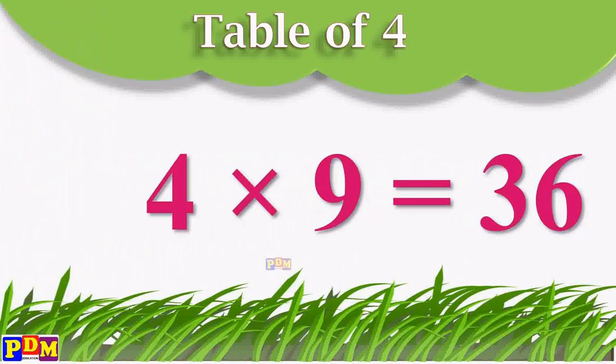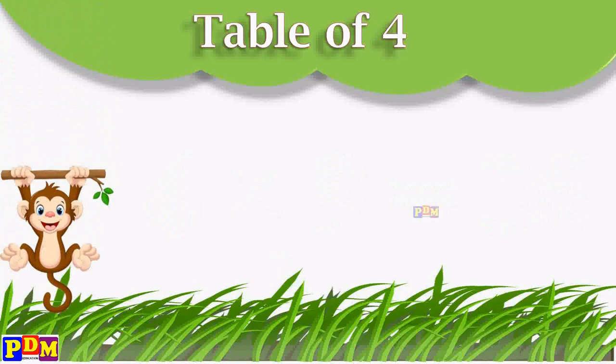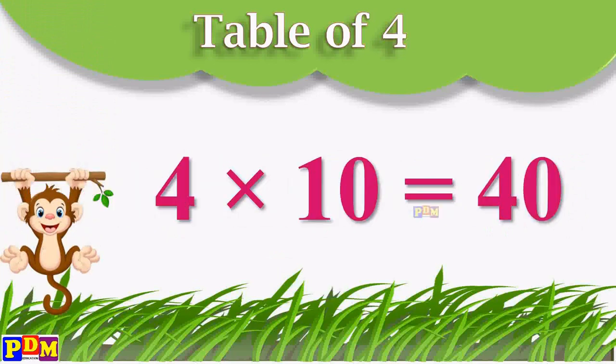Four nines are thirty-six. Four tens are forty.